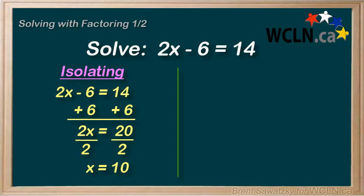And we can check this solution. We plug it back into our original equation. 2 times 10 equals 20 minus 6 equals 14. Indeed, x equals 10 makes this true. Isolating the variable is certainly an effective way to solve an equation.